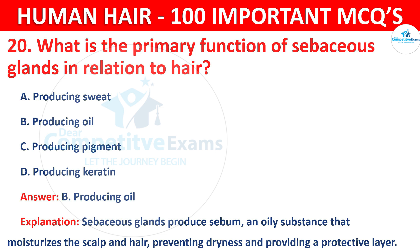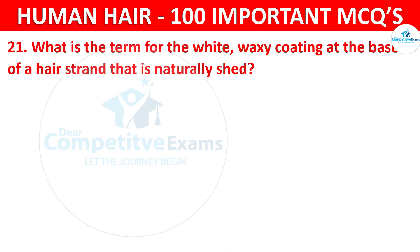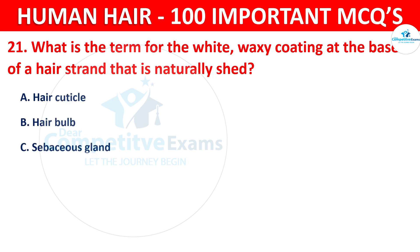Question number 21. What is the term for the white waxy coating at the base of a hair strand that is naturally shed? The options are hair cuticle or hair bulb.